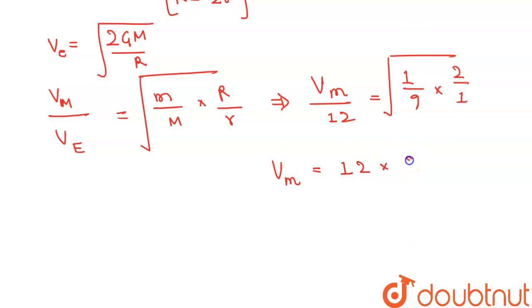12 times root 2 over 3. So escape velocity for Mars will be